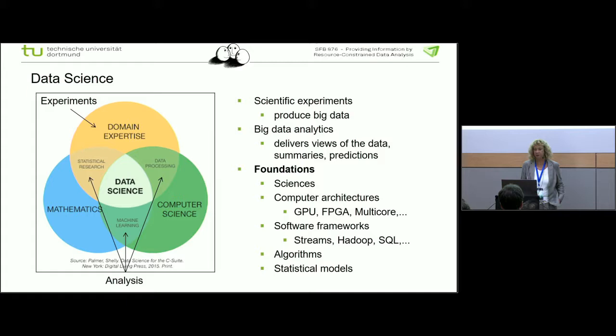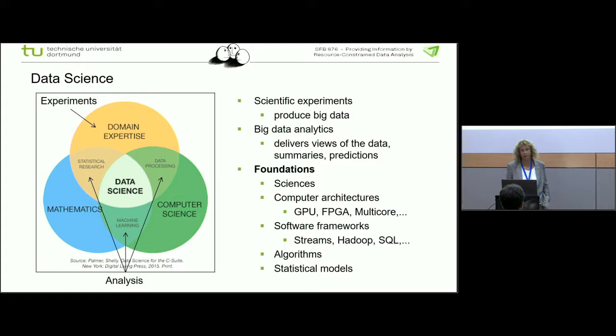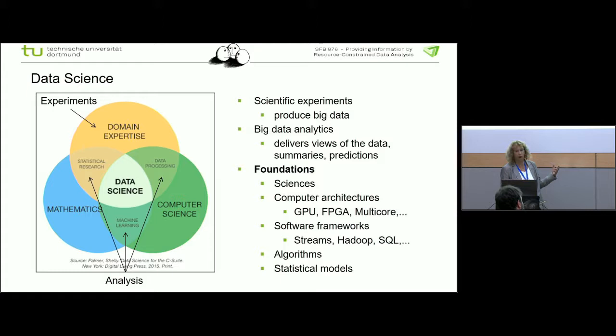The foundations should be sciences, but also computer architectures and software frameworks. We have developed one on our own — the Streams framework, which I'll tell you a little about. Then come the algorithms and statistical models. This forms an abstraction hierarchy: you have the statistical model formula at the basis, then an algorithm that makes the formula run, then a software framework that handles the algorithm in a resource-efficient way, then a computing architecture on top, and then you can draw conclusions for a particular science.